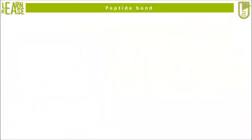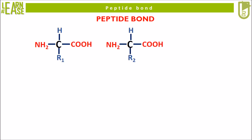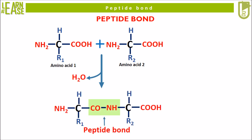To start with, let us understand the formation of peptide bonds. A peptide bond is formed when two amino acids condense. For the illustration shown, two amino acids — amino acid 1 and amino acid 2 — condense with a loss of a water molecule to form a peptide bond. This reaction can also be considered a dehydration reaction, as one water molecule is lost with the formation of one peptide bond.